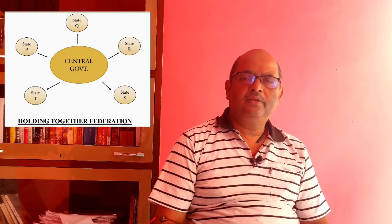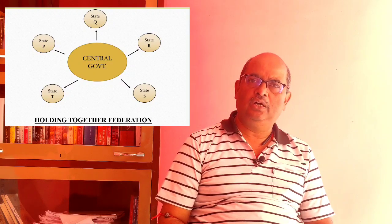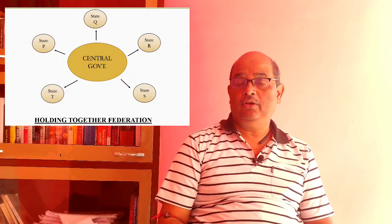This type of federation is called a holding together federation. The framers of the Indian Constitution adopted a federal system due to two main reasons: the large size of the country and its socio-cultural diversity. Examples of holding together federations are India, Belgium, and Spain. Very often the different constitutional units have unequal powers — some units may be granted special powers.